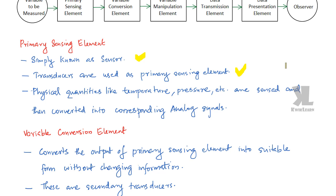There are receiving antennas and transmitting antennas. So transducers are used as the primary sensing element. Physical quantities like temperature, pressure, etc. are sensed and then converted into corresponding analog electrical signals. All these things are happening inside our primary sensing element.